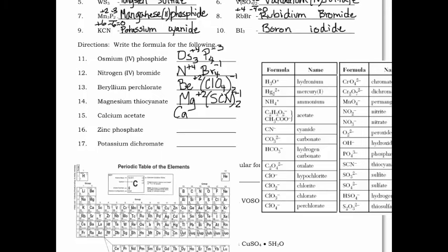Next: calcium is a group two element with a plus two. Acetate is in Table E and has two options for how you can write it — pick whichever you prefer. For now we'll use C₂H₃O₂, and its oxidation number is negative one. They don't cancel out, they don't have a common factor, so we swap and drop. The two must be outside the parentheses.